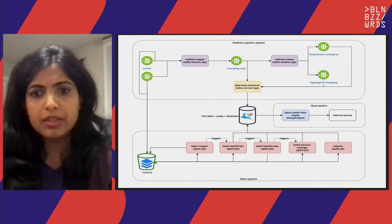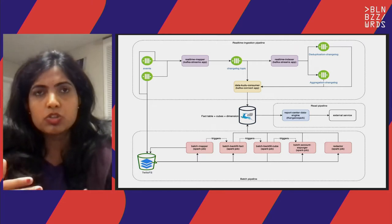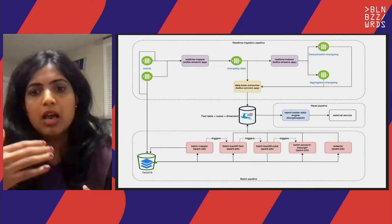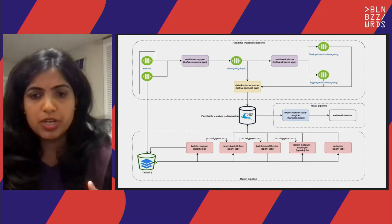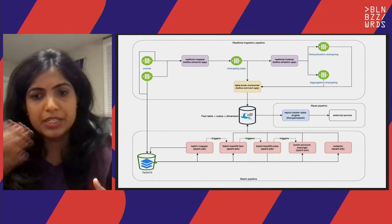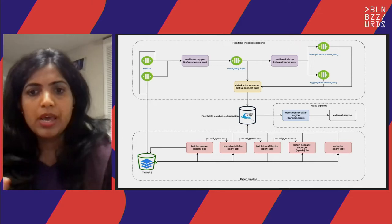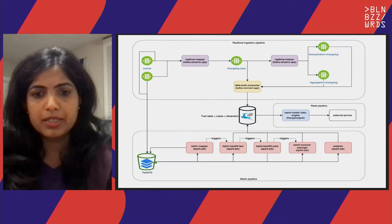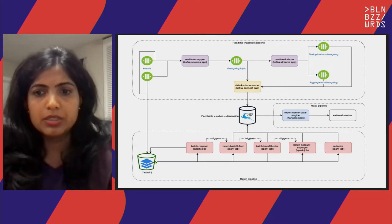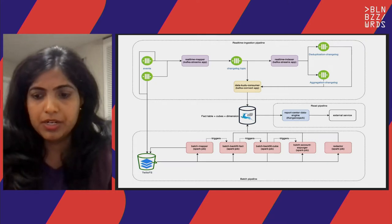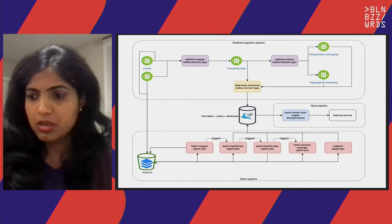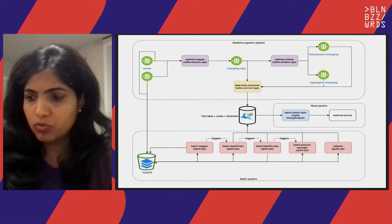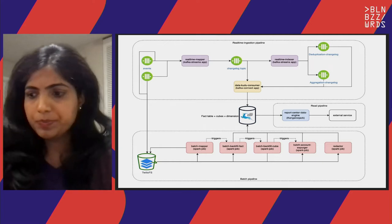The batch pipeline is used to handle updates which are more than three days old, and also to do some cleanup — like when accounts are deleted, we delete the data in our database.